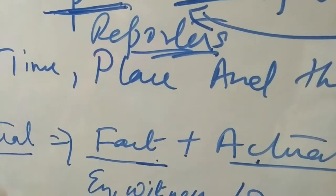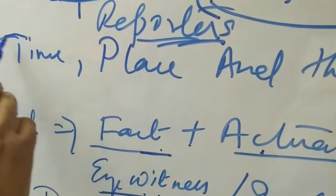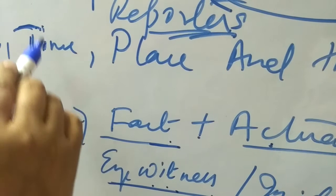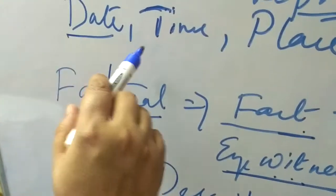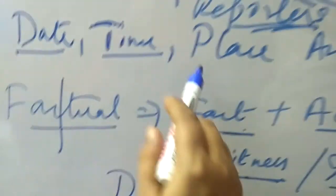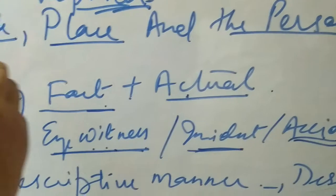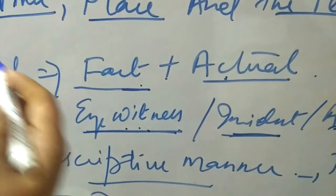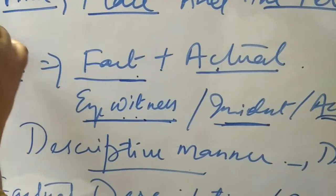As I said before, these four points are very very essential when you start writing the report. What are those four points? Date, time, place, and the person. Your first line should be written mentioning these four details.